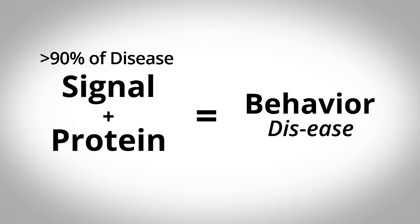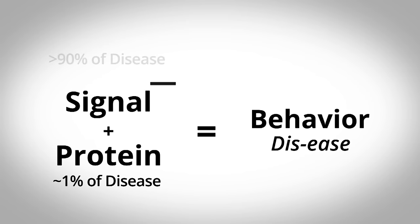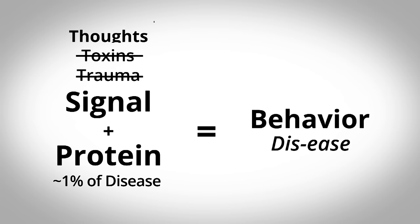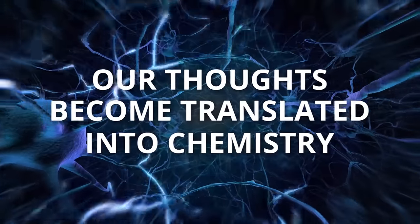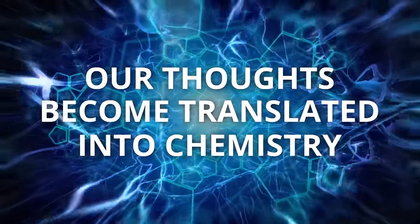Thirdly, and perhaps the most important cause of disease influencing the signal is really nothing wrong with the body at all. But what it represents is the influences of our thoughts. Our thoughts are what are translated into the chemistry.